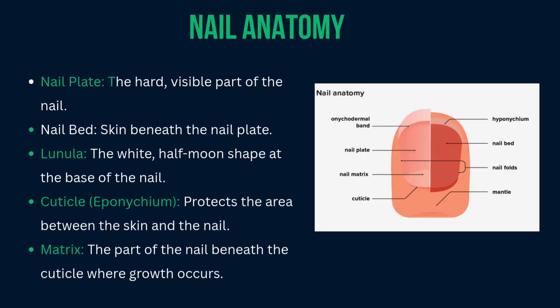For nail anatomy: the nail plate is the hard visible part of the nail; the nail bed is the skin beneath the nail plate; the lunula is the white half-moon shape at the base of the nail; the cuticle, or eponychium, protects the area between the skin and the nail; and the matrix is the part of the nail beneath the cuticle where growth occurs.